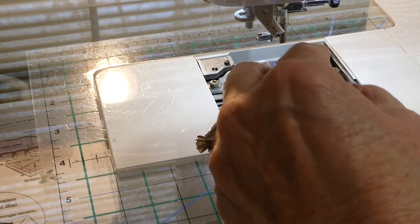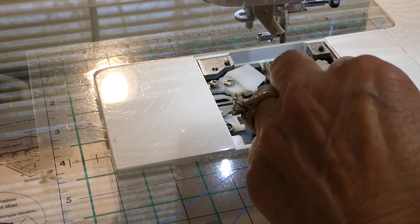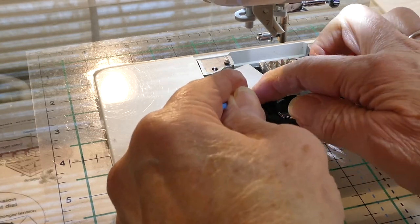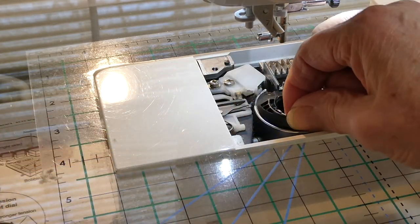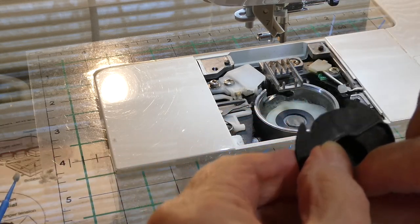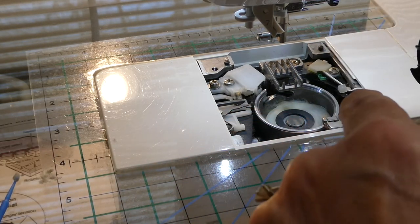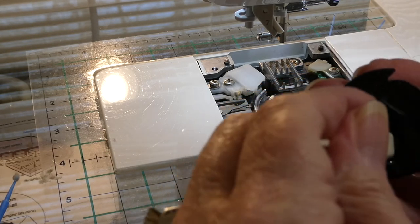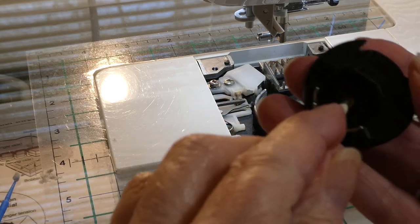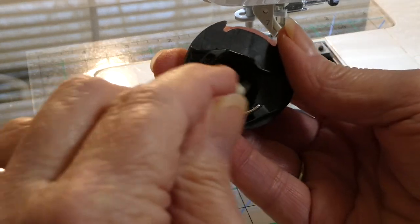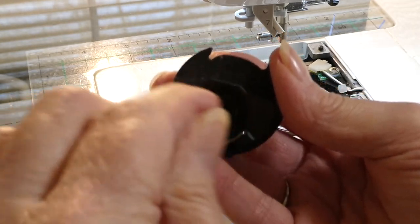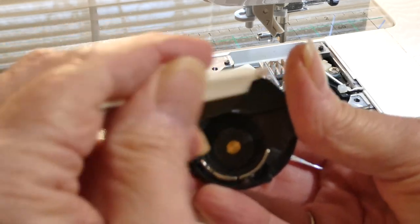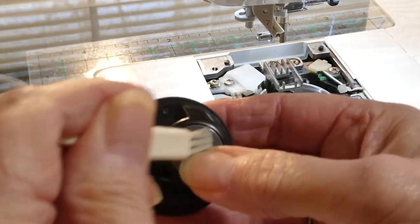Now, once I have the majority of the fuzz out of the top, then I'm going to take off my bobbin holder. Because down inside of here, it always gets really full of lint. But before I go there, I'm going to take my little brush and I'm just going to clean this out really well getting inside all the cracks and crevices. And on the underside as well.